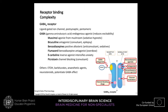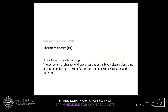Now we have seen what drugs are doing at their receptors and targets. Pharmacokinetics is how a living body acts on drugs — it deals with the measurement of changes of drug concentration in blood plasma over time, depending on absorption, metabolism, distribution, and excretion.